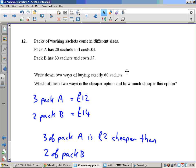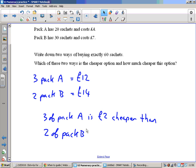Number 12: Packs of washing sachets come in different sizes. Write down two ways of buying exactly 60 sachets. So 20, 40, 60, so three of pack A which would be £12. Three fours or 30, 60, so two of pack B, two sevens, £14. So three of pack A is £2 cheaper than two of pack B, because £12 is £2 cheaper than £14. So we need to write a sentence at the end to explain it.